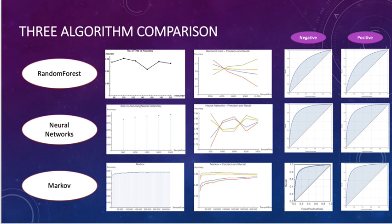Next, let's talk more about the comparison among these three algorithms. In the first column, the first graph shows how the number of trees influences the accuracy of random forest. We can see when the tree number equals 100, we get the highest accuracy. The second graph shows different sample sizes with their accuracy for neural networks, and we can see accuracy increases as sample size becomes bigger.